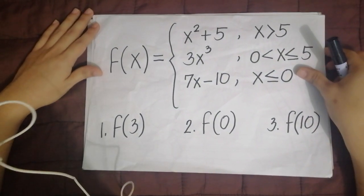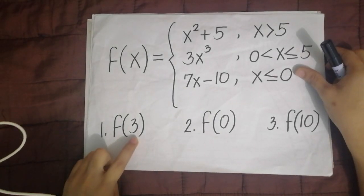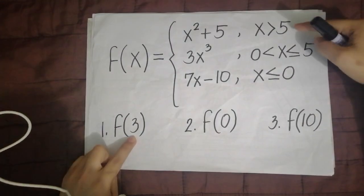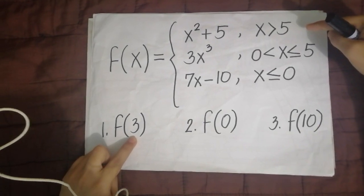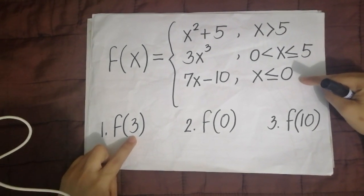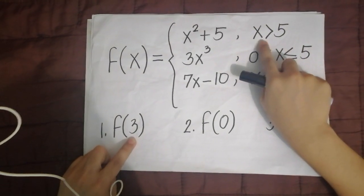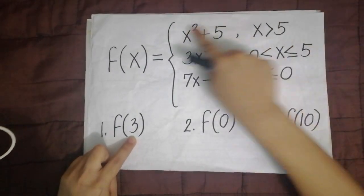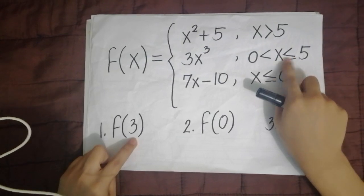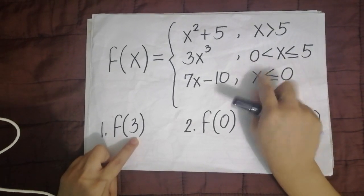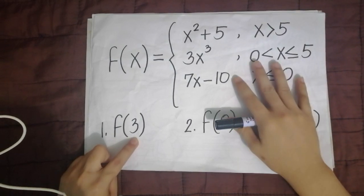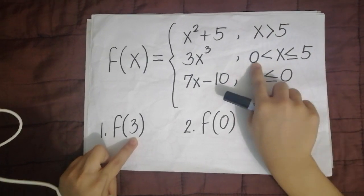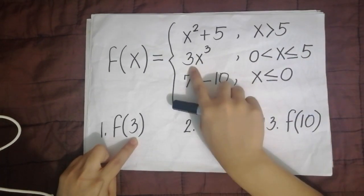So to make it clearer, let's do the evaluations. Number 1: f of 3. The value of x is 3. This value of 3 — which bracket does it fall under? Since the first restriction is x greater than 5, with values like 6, 7, 8 and up, 3 does not fit there. Looking at the second restriction, the numbers there are 1, 2, 3, 4, 5. So 3 is there. That means the expression you will use is 3x cubed.